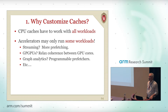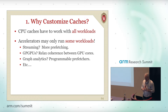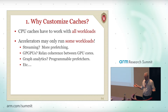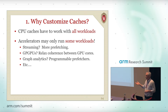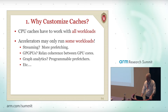The goals for crossing guard are: to allow accelerators to have customized caches — so you can have a high-bandwidth cache for a GPU; to have a simple standardized coherence interface for accelerator designers; and to provide safety for the host system — no unexpected messages, no deadlocks, no denial of service. CPU caches have to work with all workloads, so one size has to fit all. For accelerators it's a whole different ballgame: a streaming accelerator might want a really fancy pre-fetcher and maybe not such a big cache; for GPGPUs you need multiple banks; for graph analytics you might want programmable pre-fetchers.